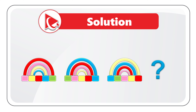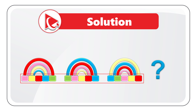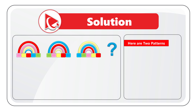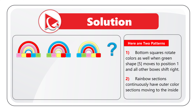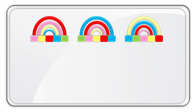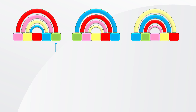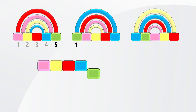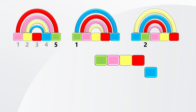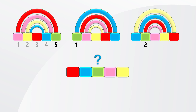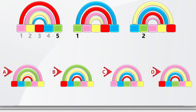This object is broken down into two parts: the rainbow section has its own pattern, and the series of squares at the bottom has its own pattern. You have to detect both patterns. Let's focus on the bottom squares first. If you look at the green square, in sequence one it's in position five, in sequence two it moves to position one, and all other objects shift right. In sequence three, the green square is in position two — so it should be in position three, in the middle. But in all four choices, the green square is in the middle, so this is not much help.